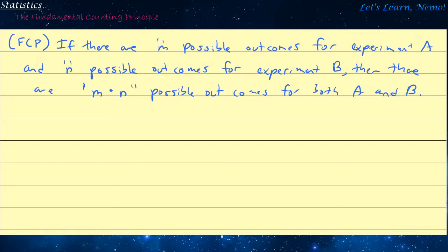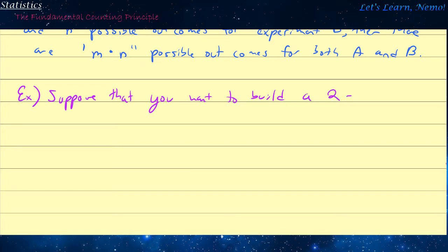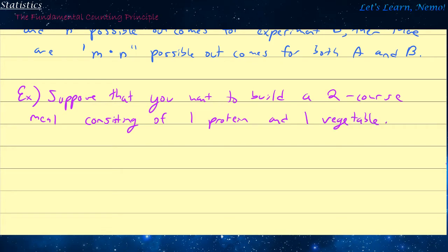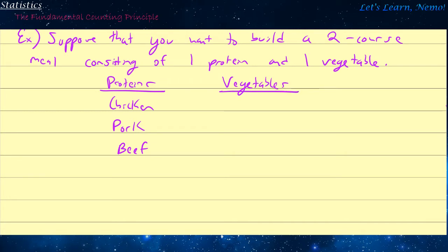Let us demonstrate this with an example. Suppose that you want to build a two-course meal consisting of one protein and one vegetable. The proteins you have to select from are chicken, pork, or beef.